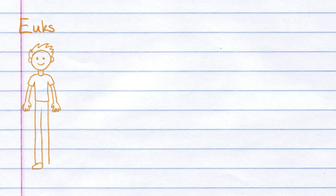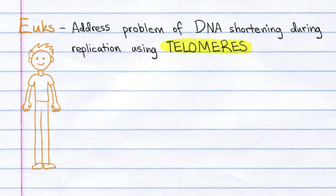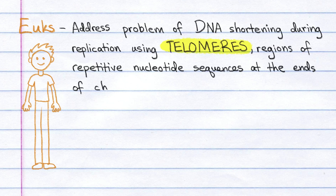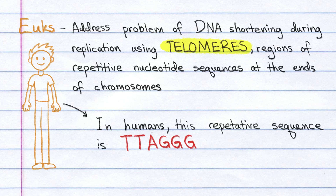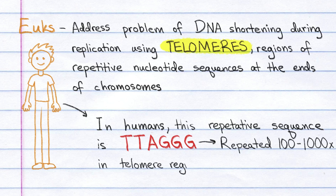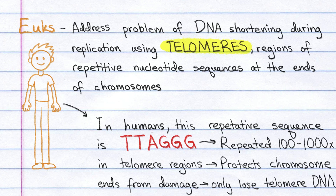Eukaryotic cells address the problem of DNA shortening during replication using telomeres — regions of repetitive nucleotide sequences at the ends of chromosomes. In humans, this repetitive sequence is TTA-GGG, and it is repeated 100 to 1000 times in telomere regions. This prevents the chromosome ends from damage, since the only DNA that gets lost is the meaningless telomere DNA.